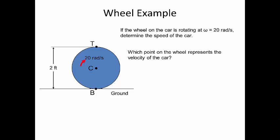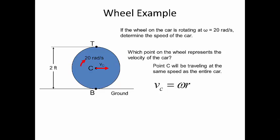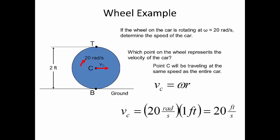Which point on the car represents the velocity of the car? The axle is connected at point C, so point C will be traveling at the same speed as the entire car. The velocity of C is equal to the angular velocity of the wheel times the radius. So the velocity of the car is equal to 20 radians per second times 1 foot, which equals 20 feet per second.